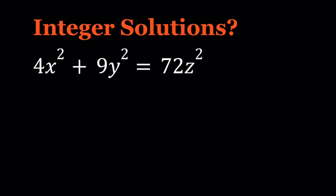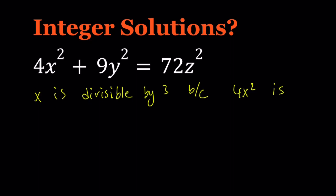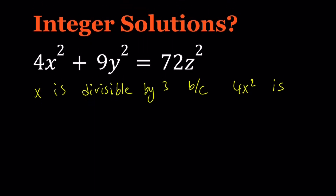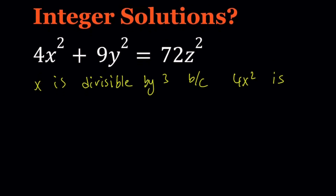Notice that 9y squared and 72z squared are both multiples of 3. So we can safely say that x is divisible by 3, because 4x squared is. 4 doesn't contain any 3s, therefore x must be divisible by 3 here.